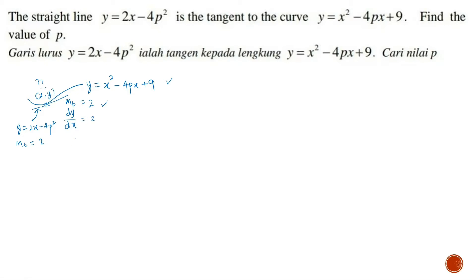So let's differentiate the curve. Under dy/dx, we will have 2x minus 4p, and that equals 2. Let's simplify — we factorize the 2 out, then simplify both sides by 2. We will have x minus 2p equals 1. Therefore, x equals 1 plus 2p.